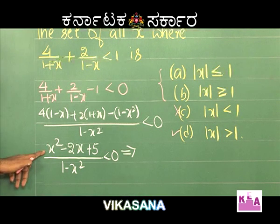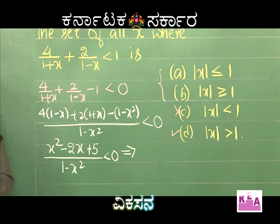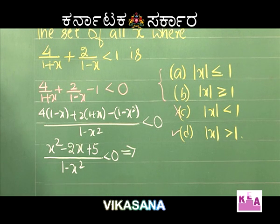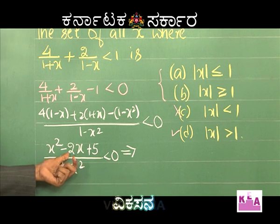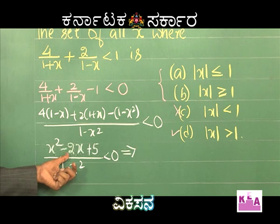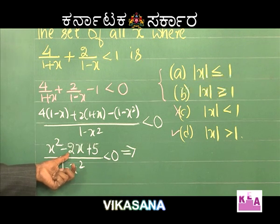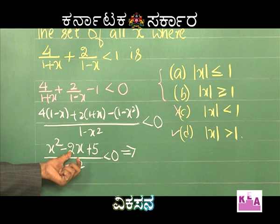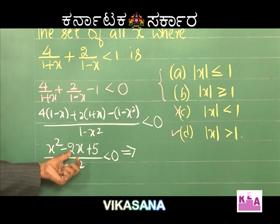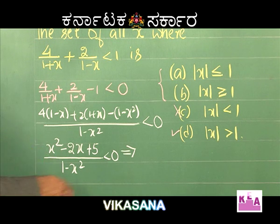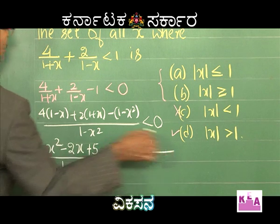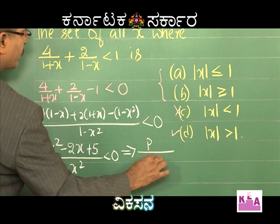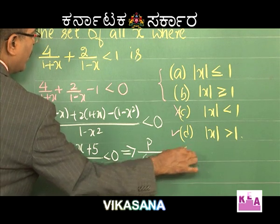The numerator is x² - 2x + 5. What kind of quadratic is this? Its roots are imaginary because b² = 4, and 4ac = 4×1×5 = 20, so b² < 4ac. This means the numerator has imaginary roots and is always positive. Since the numerator is always positive, we only need to consider the denominator. Let P represent this positivity: P / [(1-x)(1+x)] < 0.